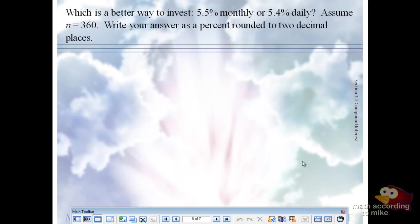Which is better, 5.5% monthly or 5.4% daily, assuming 360 days in the cycle? The directions are important. Write your answer as a percent rounded to two decimal places.